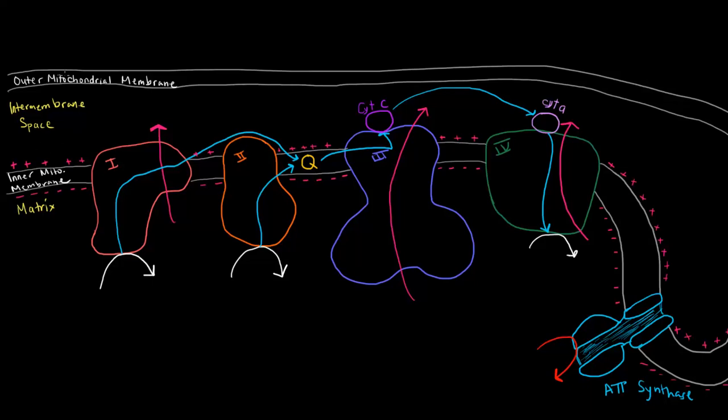So, if this is the outer mitochondrial membrane here, and this is the inner mitochondrial membrane, then the electron transport chain is along this inner mitochondrial membrane. These are protein complexes along the membrane. Anything inside here is considered the matrix, and anything out here would be part of the intermembrane space.